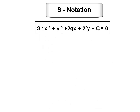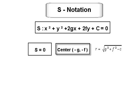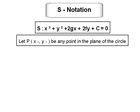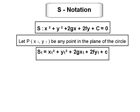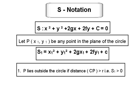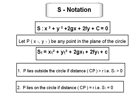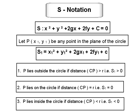Let S = x² + y² + 2gx + 2fy + c = 0 be the equation of a circle with center (−g, −f) and radius r = √(g² + f² − c). Let P(x₁, y₁) be any point in the plane. Then S₁ = x₁² + y₁² + 2gx₁ + 2fy₁ + c. The point P lies outside the circle if CP > r, i.e., S₁ > 0. The point P lies on the circle if CP = r, i.e., S₁ = 0.